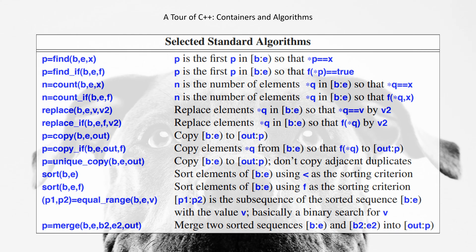p=unique_copy(b,e,out) - Copy [b,e) to out; don't copy adjacent duplicates.